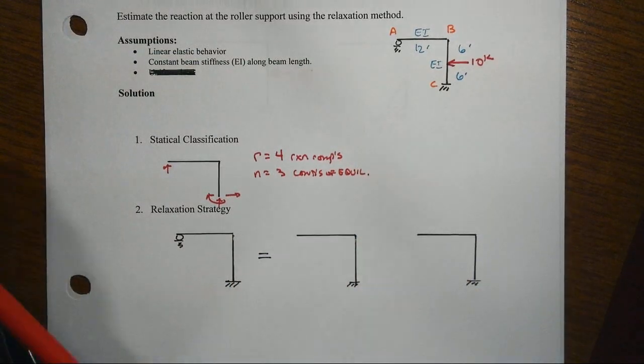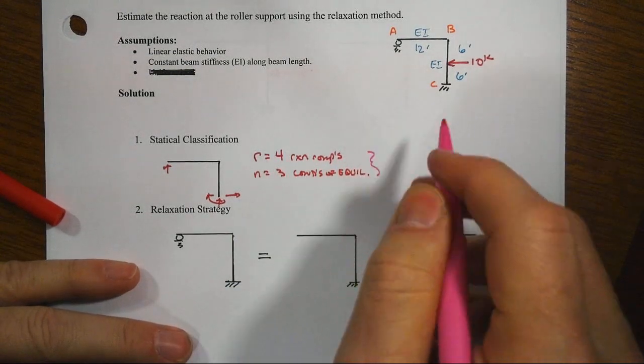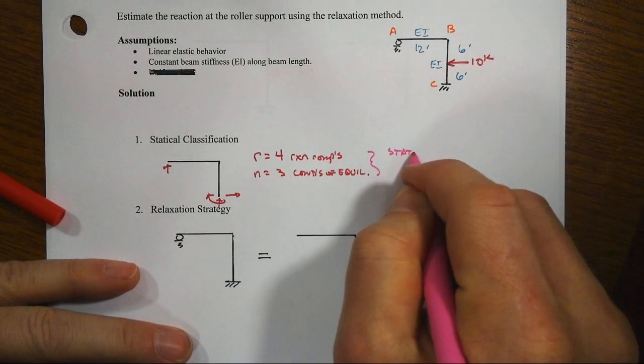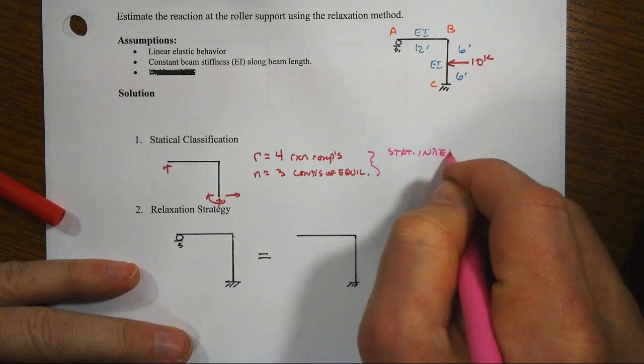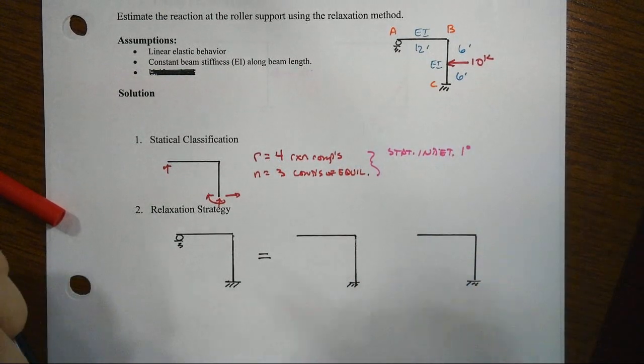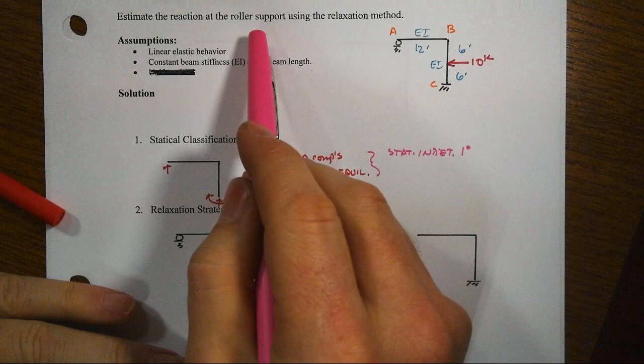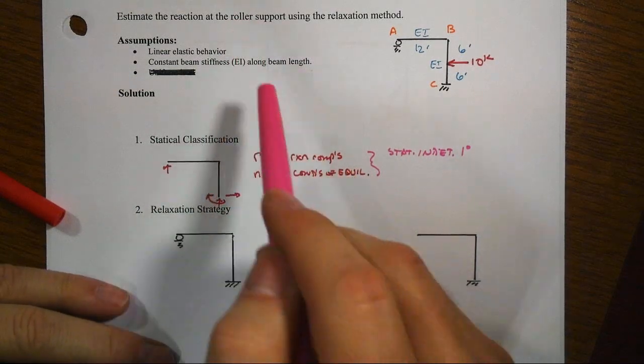Which means that we have ultimately a statically indeterminate system to the first degree. So that's why we're going to go find this reaction at the roller support.